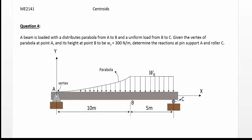And then with a uniform distributed load from B to C with the intensity of 300 N per meter. The vertex of the parabola is given at point A, and we are to determine the reactions at pin support A and at roller C.